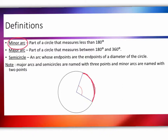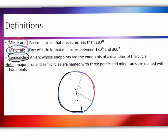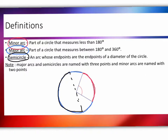A major arc is a part of a circle that measures between 180 and 360 degrees — definitely more than 180, but less than 360. A semicircle is an arc whose endpoints are the endpoints of a diameter of a circle, so a semicircle would be half of the whole circle. Regarding notation: major arcs and semicircles are named with three points, and minor arcs are named with two points, because major and semicircles are large enough that you need three points to capture the whole area.